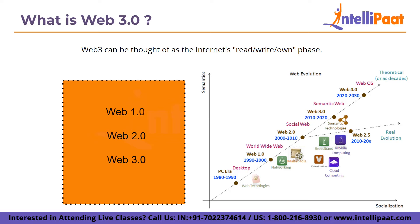Looking at this evolution graph, in the 1980s and 1990s we had the PC era. Between 1990 and 2000 came Web 1.0, introducing networking and multimedia. Then Web 2.0 from 2000 to 2010 brought broadband, mobile computing, cloud computing, and virtualization. Web 3.0 followed, with semantic technologies playing a wider role, and Web 4.0 is expected to emerge between 2020 and 2030.